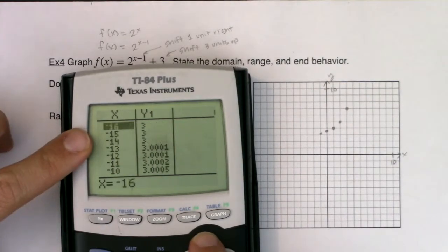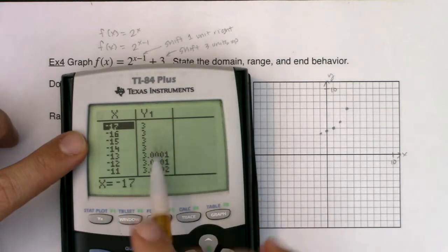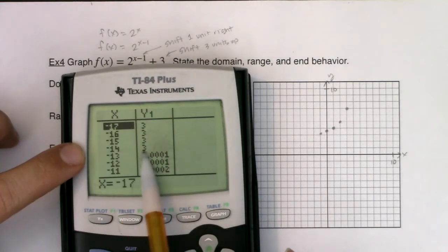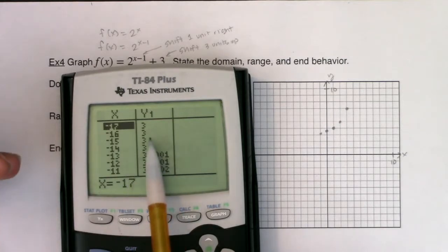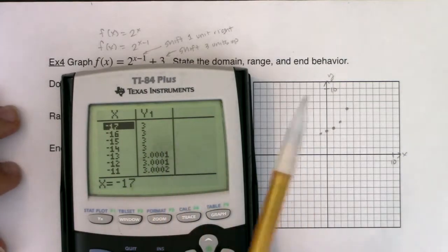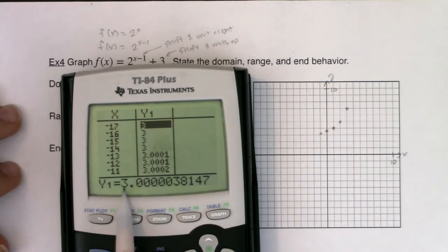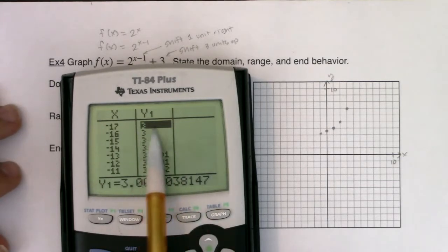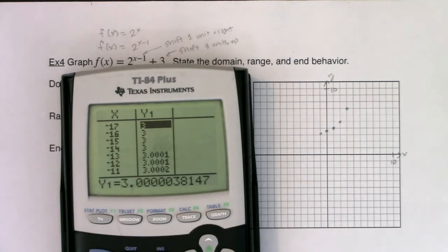So, whereas before my horizontal asymptote was y equaling 0, I think you can see now my horizontal asymptote is going to be y equaling 3. And if I kind of scroll back here, you can see my y value is getting closer and closer and closer to 3. Now, it looks like they touch 3 here. They technically don't. It's just that the decimal is so small your calculator can't handle it. Do you see what I'm saying?